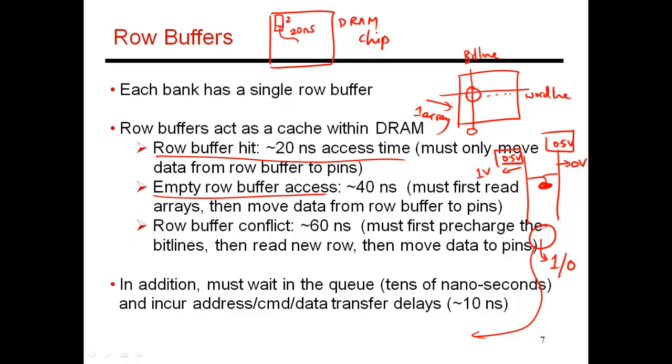That entire process takes about 20 nanoseconds. So to go from the pre-charged bit lines to a value being produced over here, that takes about 20 nanoseconds. So if you're accessing an empty row, the total delay will be 40 nanoseconds. 20 nanoseconds to bring data into the row buffer, and an additional 20 nanoseconds to move the data from the row buffer to the output pins.